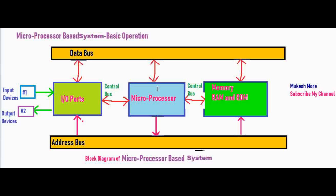The microprocessor is your central processing unit, which will take the data from input devices and from main memory through the data bus. That data travels via the data bus and the microprocessor will execute the instruction. It will execute the data received from main memory and input-output ports, and the processed data is then sent to the main memory or output port.